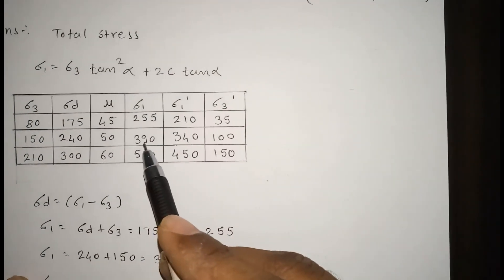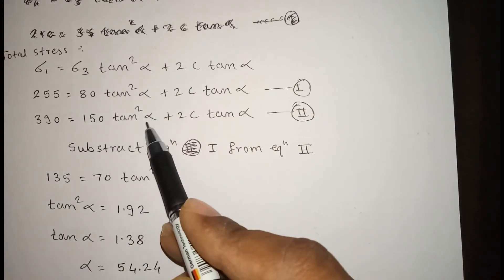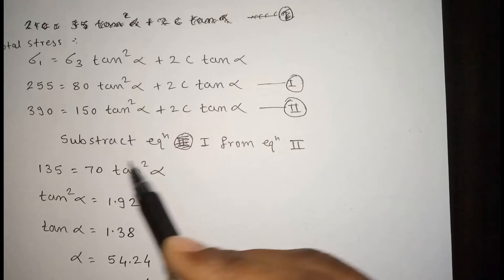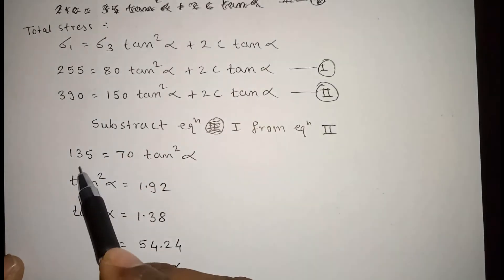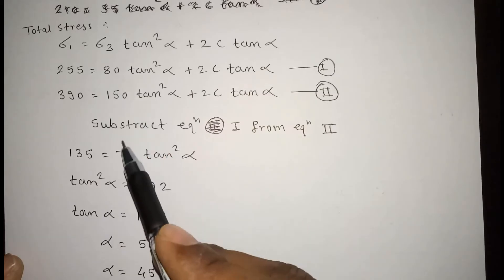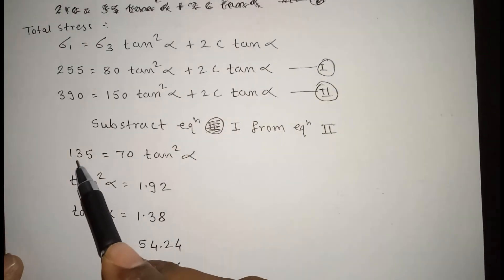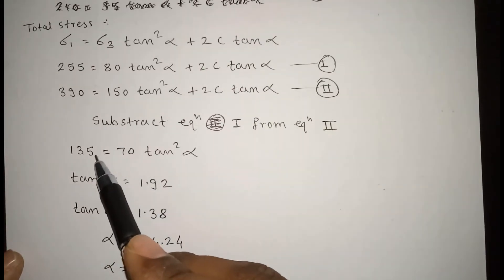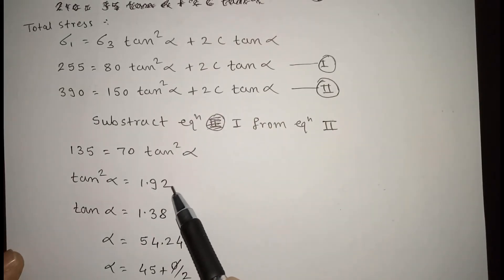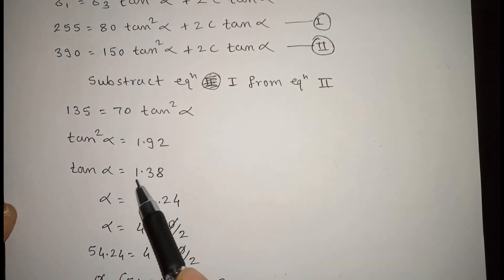Taking the second series: σ1 = 390 and σ3 = 150, so 390 = 150·tan²α + 2c·tan α. This is equation 2. Subtracting equation 1 from equation 2: 390 − 255 = 135, and 150 − 80 = 70. The 2c·tan α terms cancel out, giving 135 = 70·tan²α. So tan²α = 135/70 = 1.92, and taking the square root, tan α = 1.38.